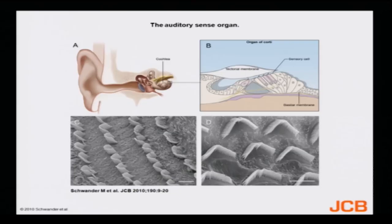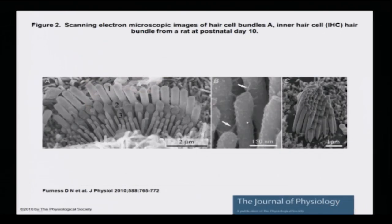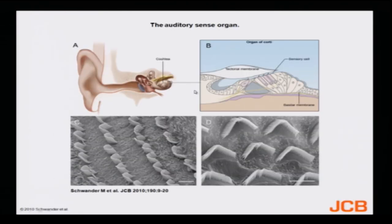Coming back to the structure of the auditory sense organ — you can see the outer ear, the middle ear with all three bones, and here is the inner ear where the hair cells are present. These micrographs show the arrangement of the hair cells. They are arranged in an array, sitting inside the cochlea.